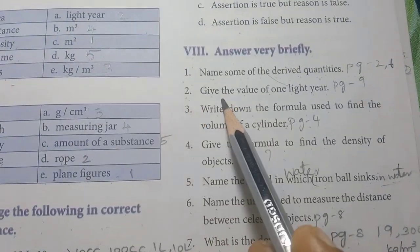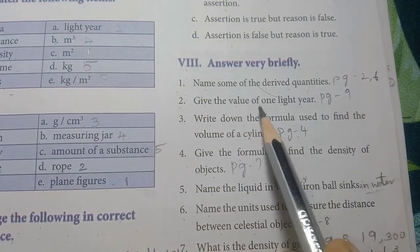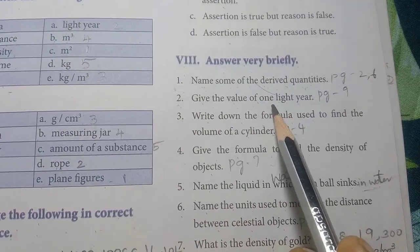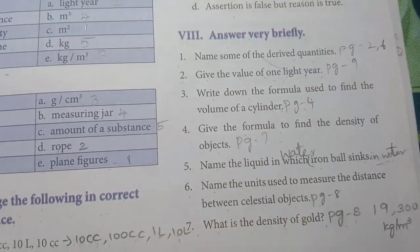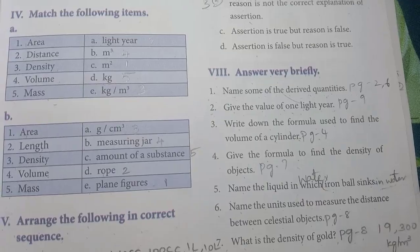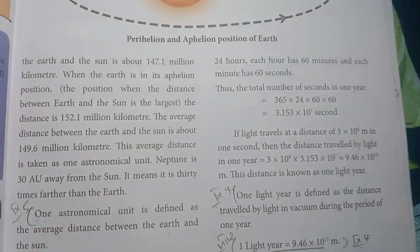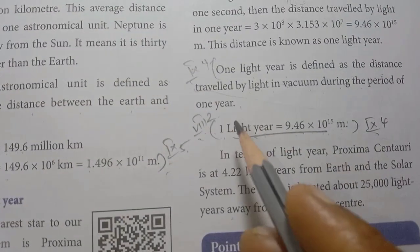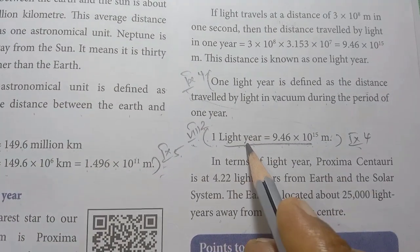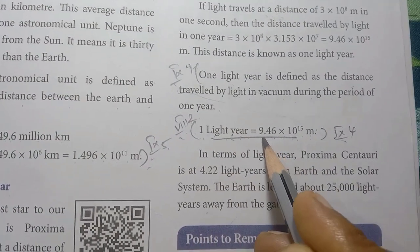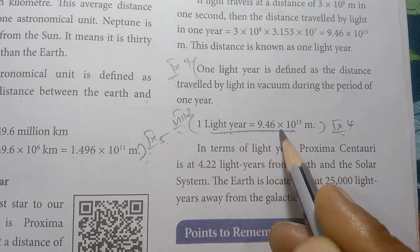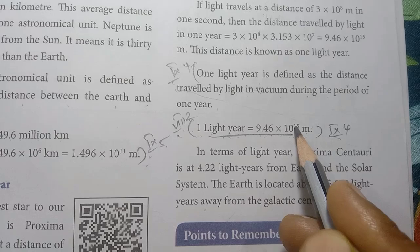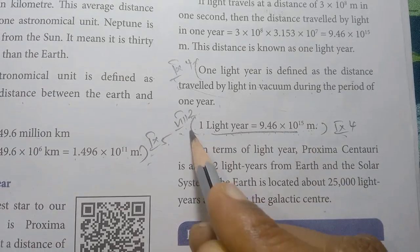Second: give the value of one light year. The value is on page number 9. Memorize this: one light year is equal to 9.46 into 10 power 15 meters.